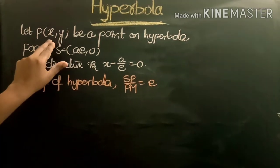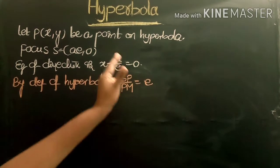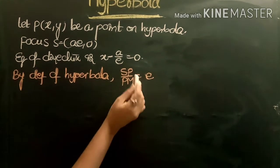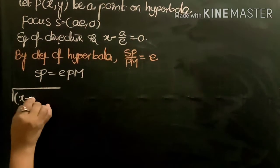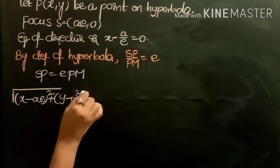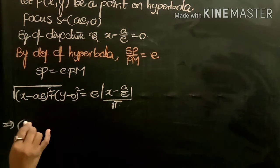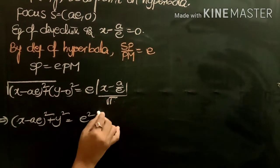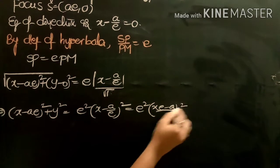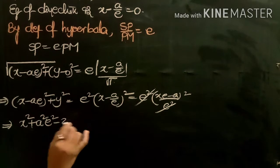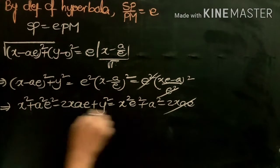To find the equation of the hyperbola in standard form, let P equal (x, y) be any point on the hyperbola, with S equal to (ae, 0) and directrix x minus a over e equals zero. By definition, SP by PM equals e, so SP equals e times PM. Squaring both sides: (x minus ae)² plus y² equals e² times (x minus a/e)². Expanding and cancelling the 2xae terms gives x² plus a²e² plus y² equals x²e² plus a².